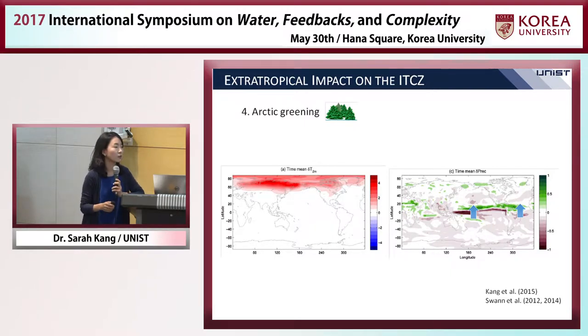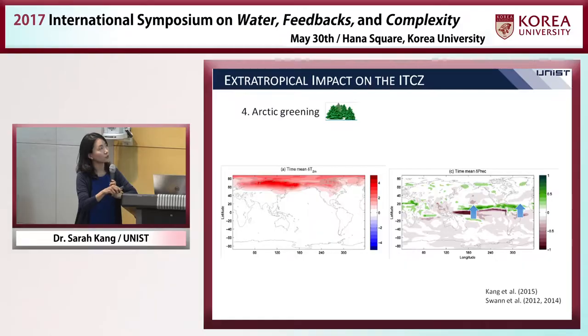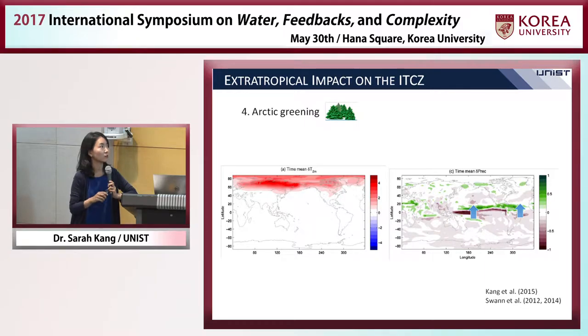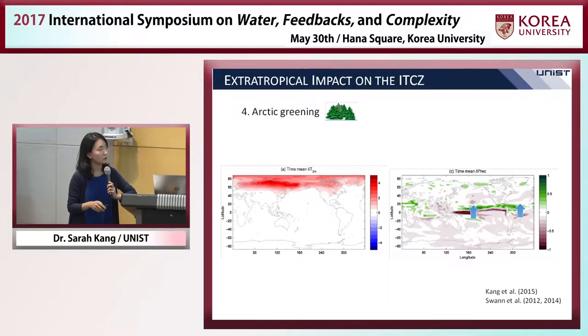One signature of global warming is a poleward extension of the tree line. To investigate that effect, we prescribed more vegetation over the Arctic. With vegetation replacing ice, there is less solar radiation reflection, which warms the Northern Extratropics. What we observe is a northward shift of tropical precipitation. There are many other studies that show this extratropical forcing can have an impact on the ITCZ location.